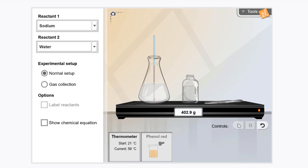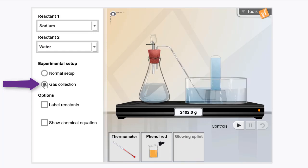For our second experiment, let's click reset and select gas collection as our experimental setup. When play is selected, we observe gas produced by the tiny little bubbles in the cylinder.